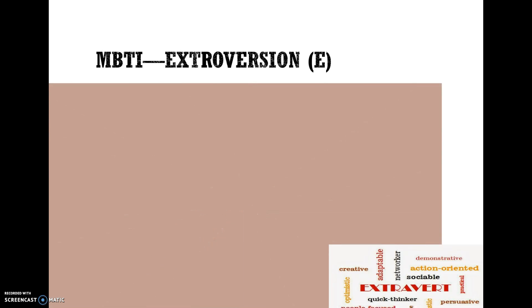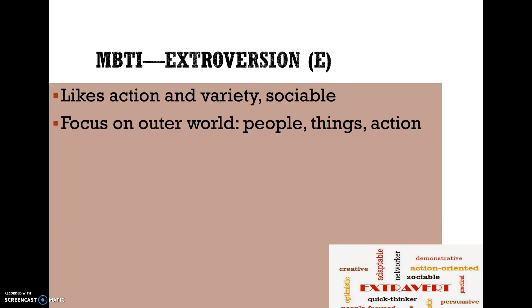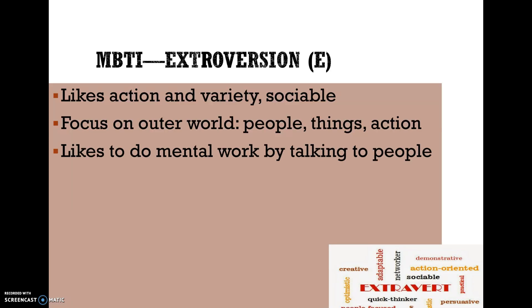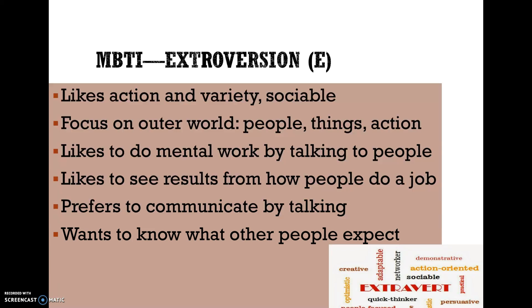The first dimension we'll go over in the MBTI is Extroversion — the letter E. Extroversion describes someone who likes action and variety. They're very sociable and easy to talk to, going to a party and talking to others. They focus on the outer world — people, things, action. They like to deal with mental work by talking to people, like to see results from how people do a job, prefer to communicate by talking, want to know what other people expect, and act first and think later.